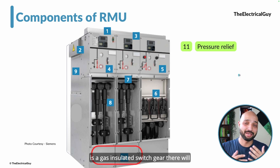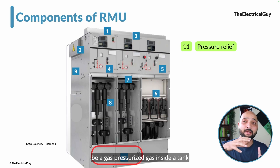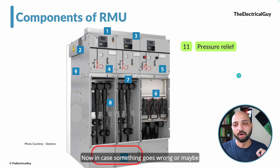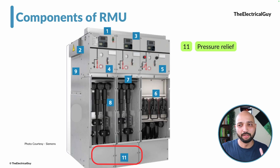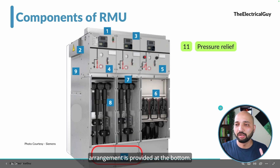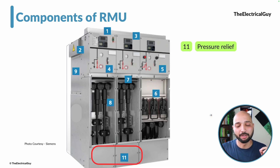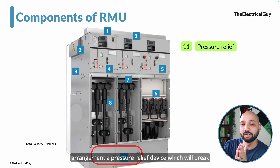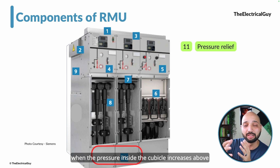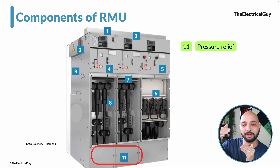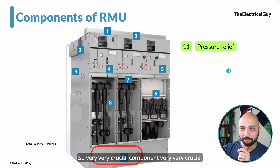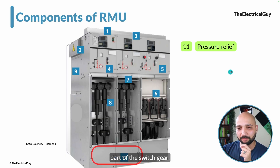As mentioned, if it is a gas-insulated switchgear, there will be pressurized gas inside a metal-enclosed tank. In case something goes wrong or a fault occurs, there has to be some arrangement to release that gas or additional pressure from the device. Hence, a pressure relief arrangement is provided at the bottom. There will be a pressure relief device which will break when the pressure inside the cubicle increases above a defined limit, thereby protecting the switchgear and the persons working in the vicinity. It is a very, very crucial component.